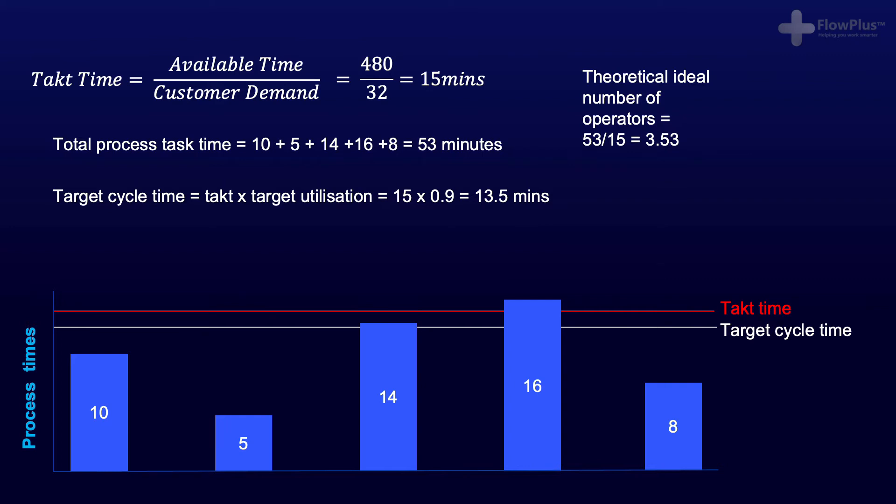If all operators are working to this target cycle time, you are aware that they have 10% breathing space built in to account for the small levels of process variation.